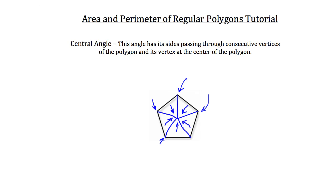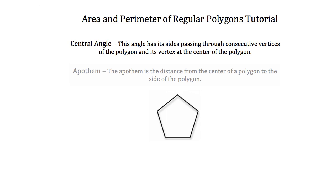Now let me tell you why they're important. They can later be used to help you approximate area for different regions of these polygons. Let's move on now to the apothem. The apothem is the distance from the center of a polygon to the side of the polygon. So if you were to draw that in, it would look like this.